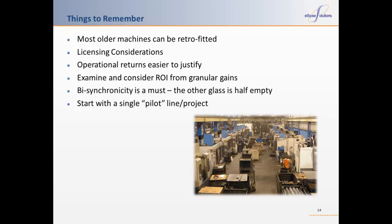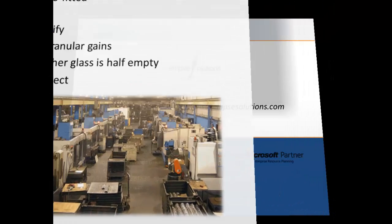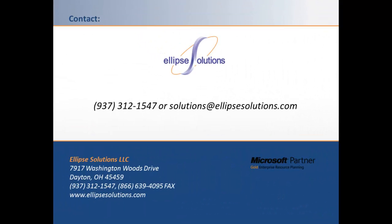If you're going to take the time and expense of integration, remember that a simple one-way data harvesting solution provides minimal operational advantages — a true bisynchronous link is the way to go. We suggest most customers start with a single production line and roll out the system to other lines for user acceptance, giving your internal resources time to learn and add value. If you have any questions or need help with your integration project, reach out to us at Ellipse Solutions. We have the experience to help you do it right the first time.